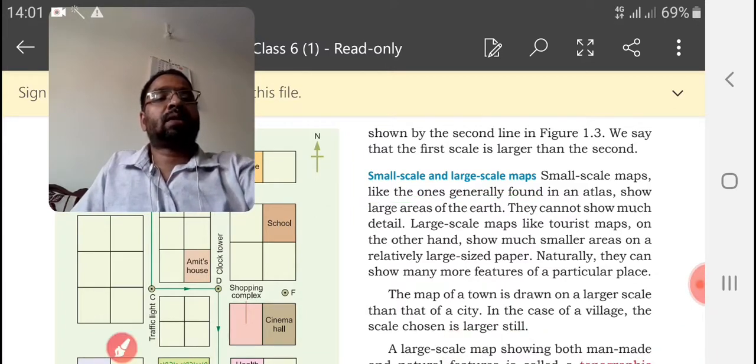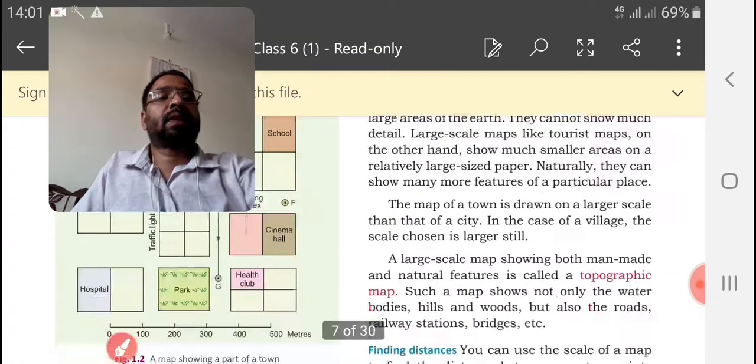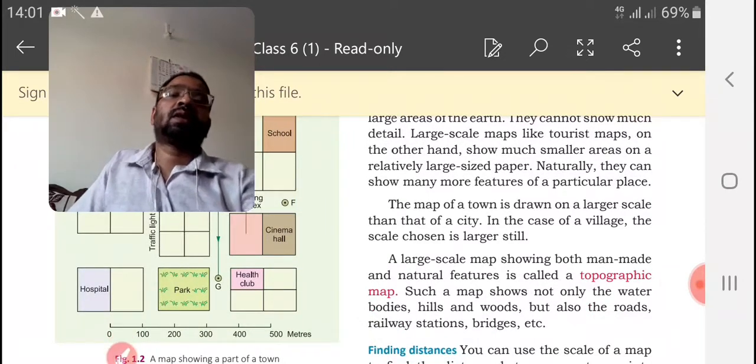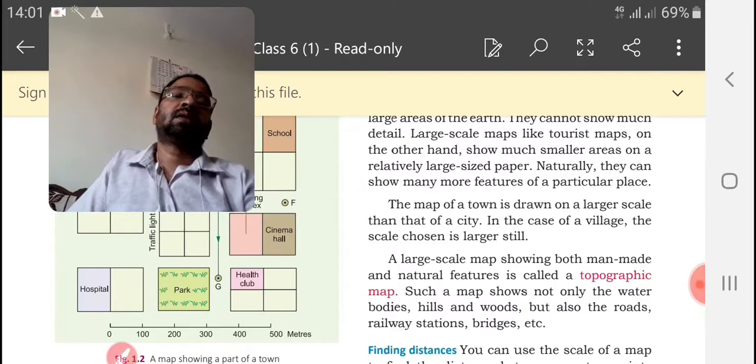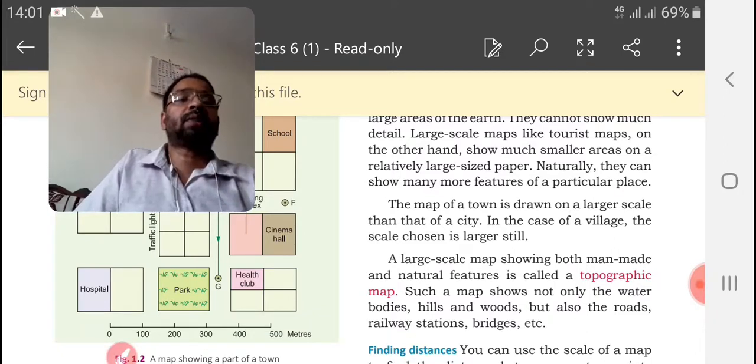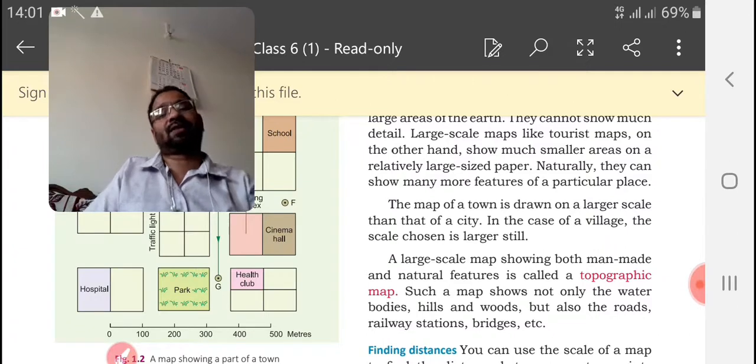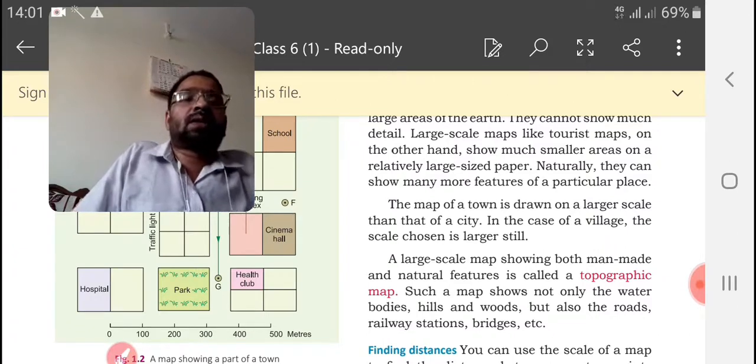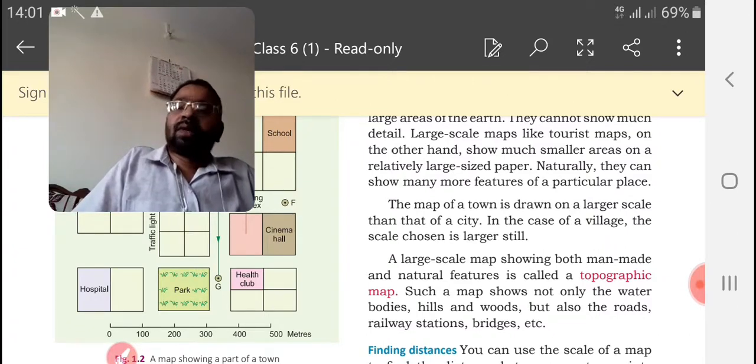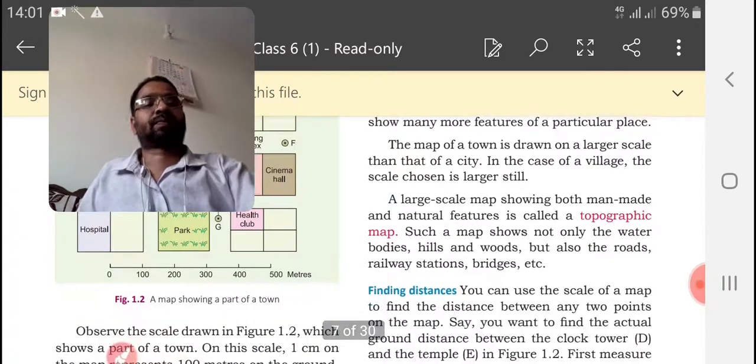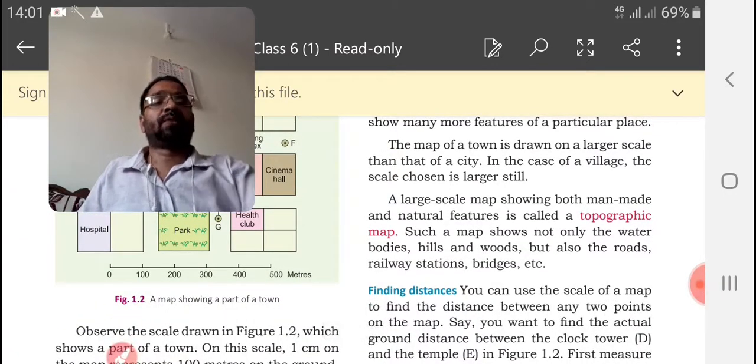Next important matter was topographic map. Topographic map is a map showing both manmade and natural features. We are getting information of both types of features in topographic map.